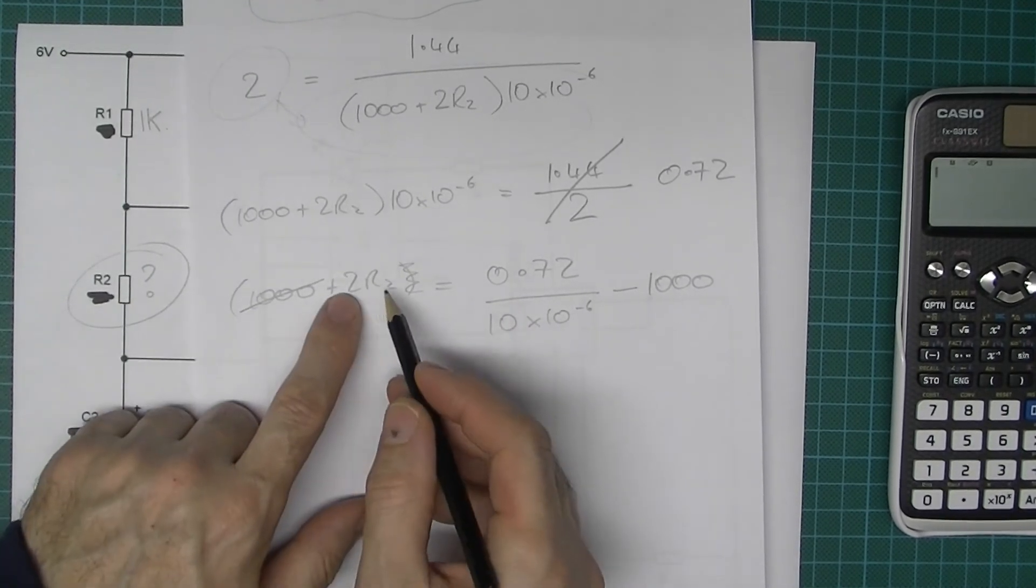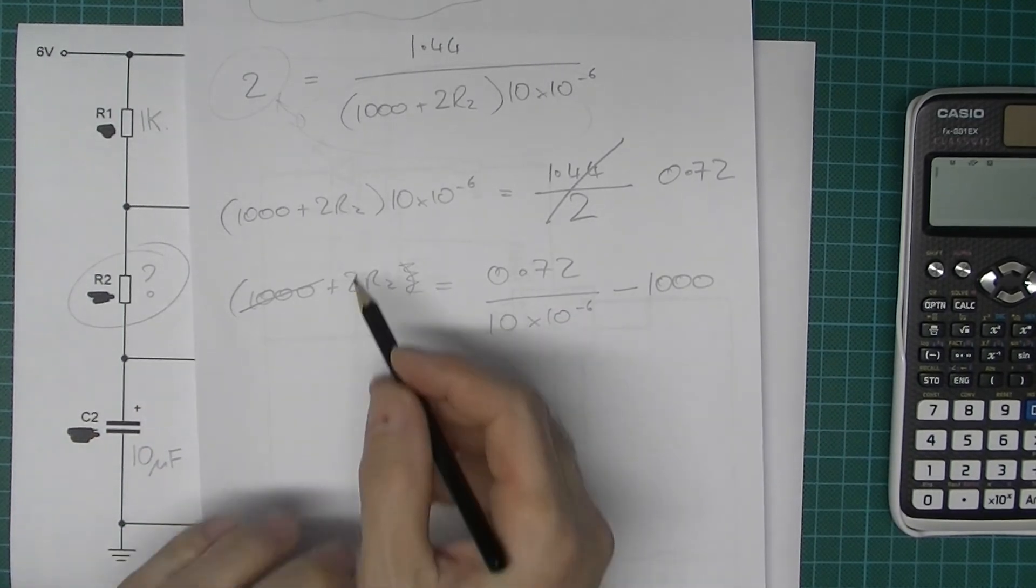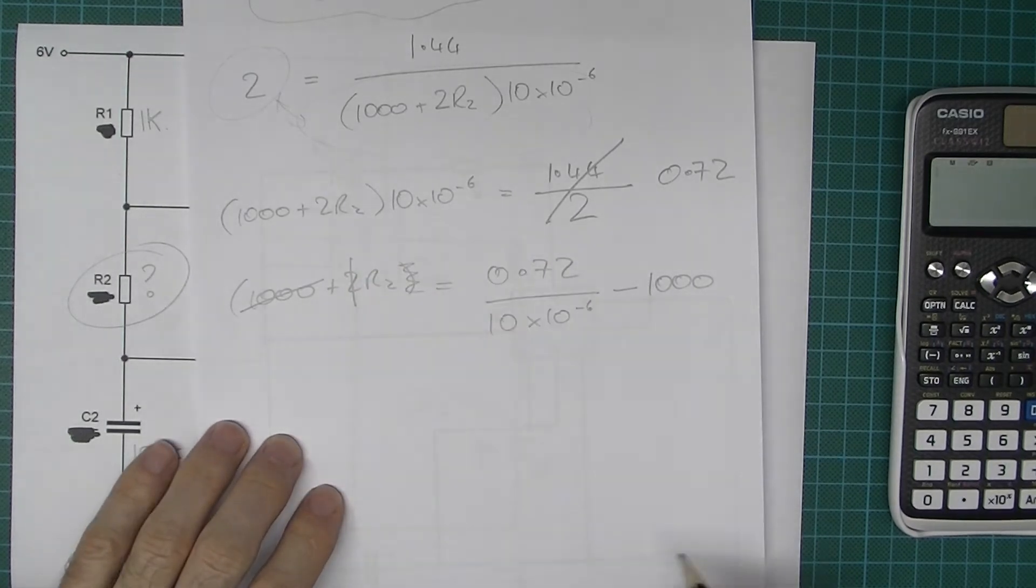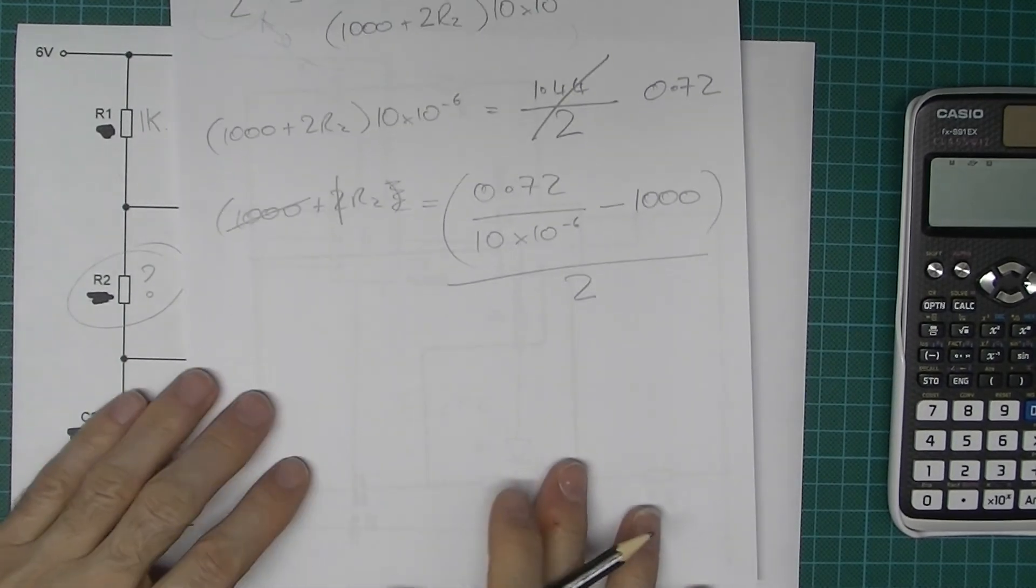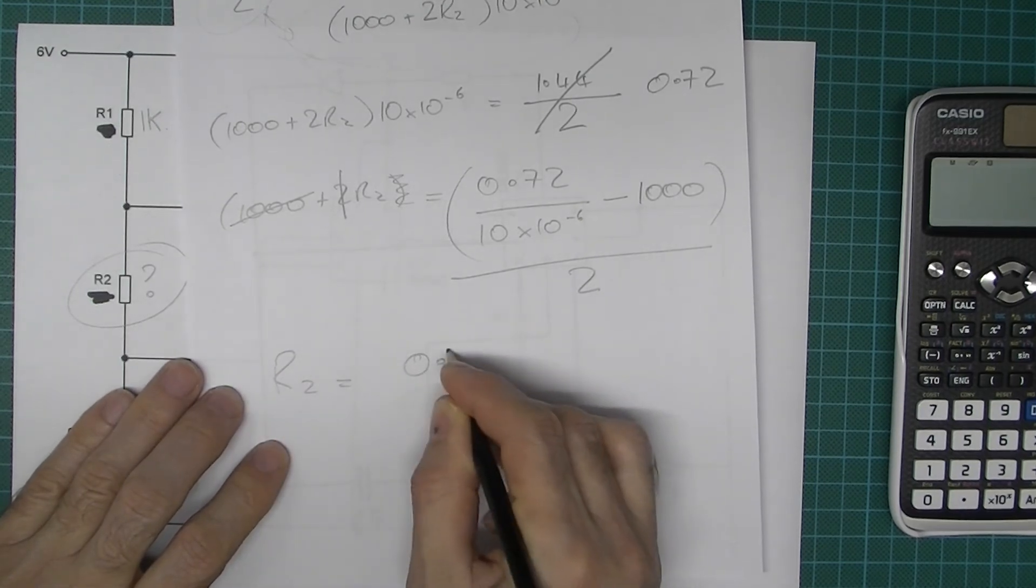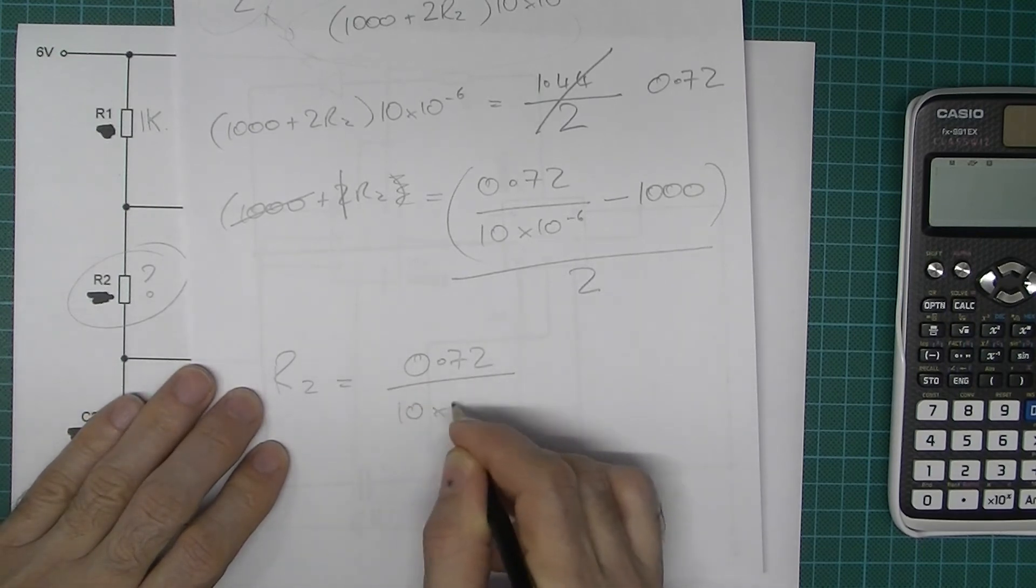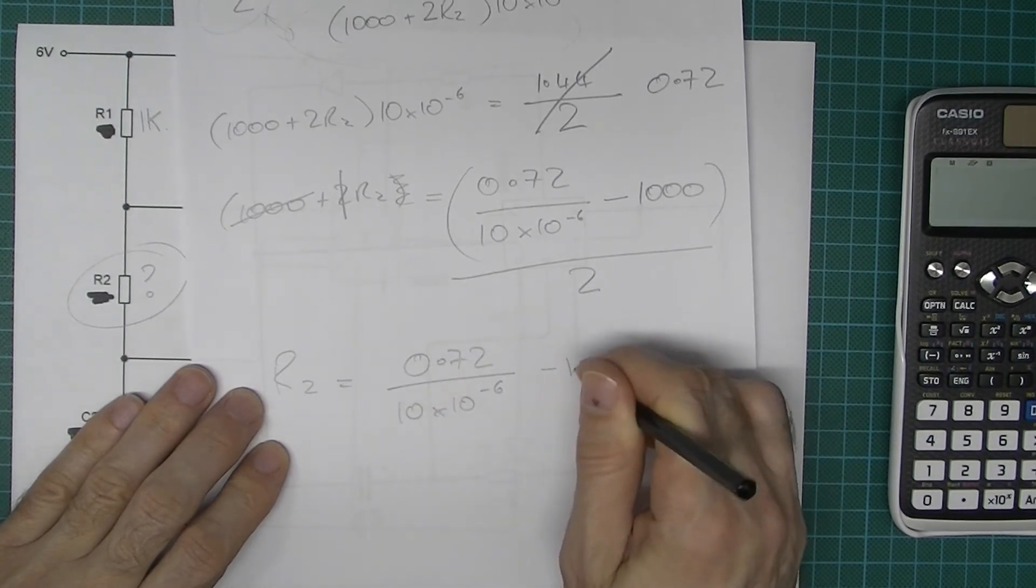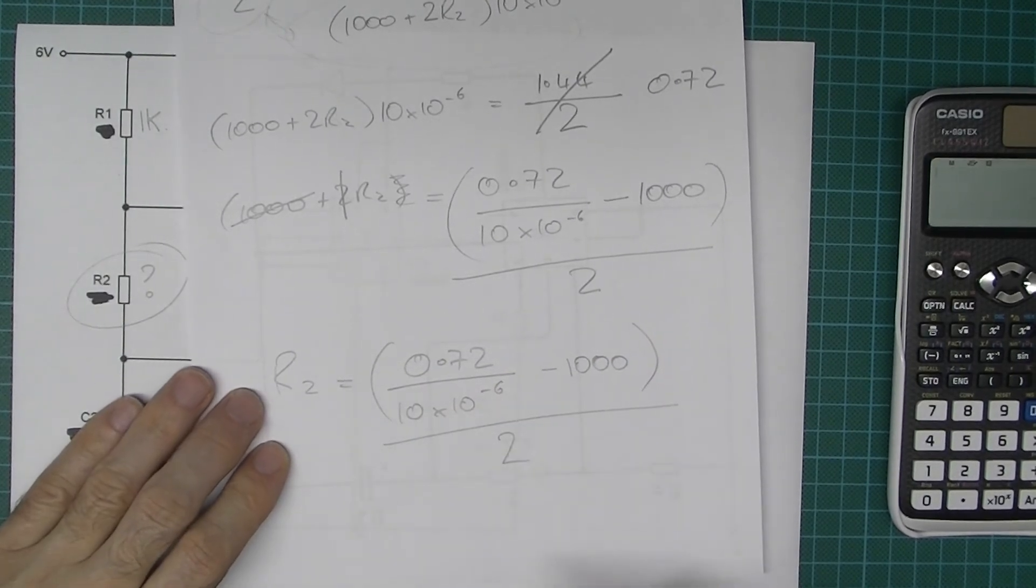So I want to get rid of the times 2, so I need to divide this side by 2, so let's get rid of that, that means then I've got to divide all of that by 2. Let's write this out again in case it's confusing, so R2 equals 0.72 over 10 times 10 to the minus 6, and then once you've calculated that, minus 1000, and then divide the whole lot by 2.